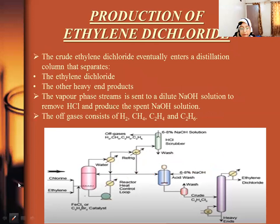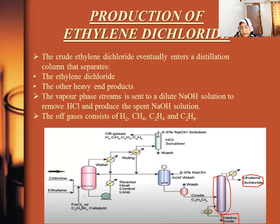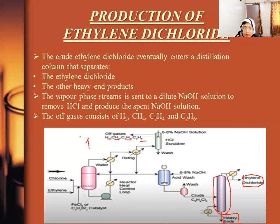The ethylene dichloride still contains many impurities, so it is sent to a distillation unit. The top product is purified ethylene dichloride and the impurities are separated as the bottom product. The off gases — hydrogen, methane, ethane, and ethylene — are separated as purge gases or fuel gases.